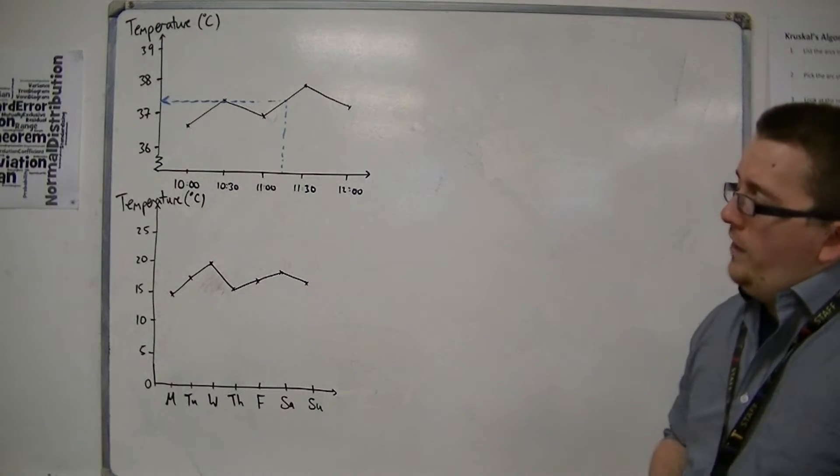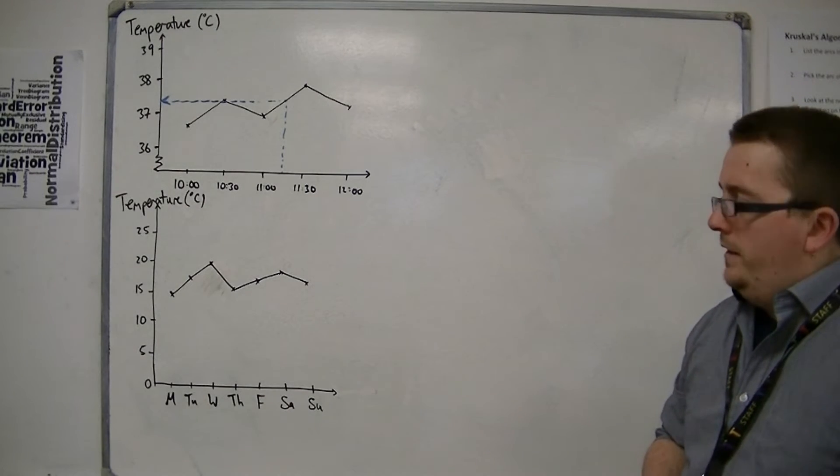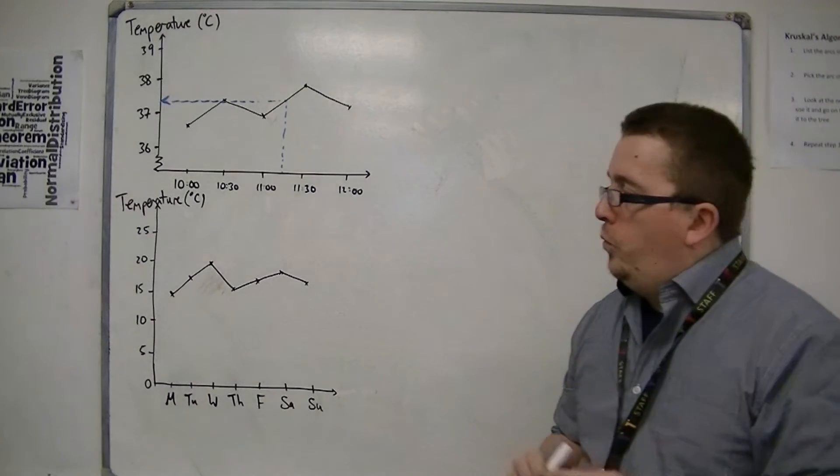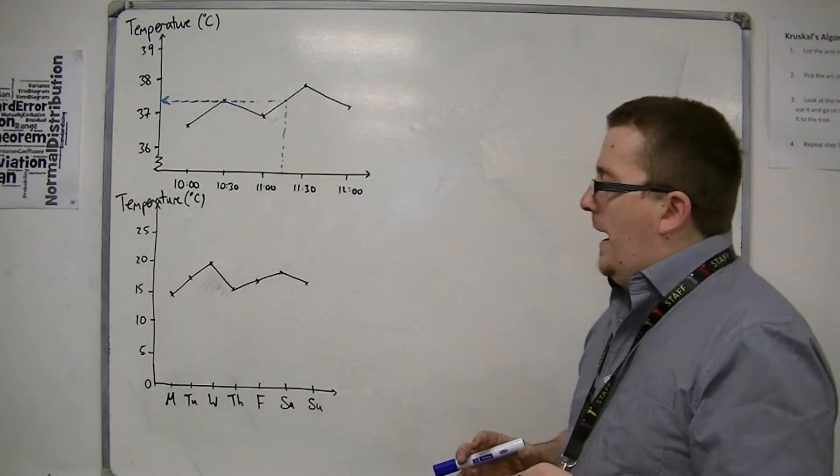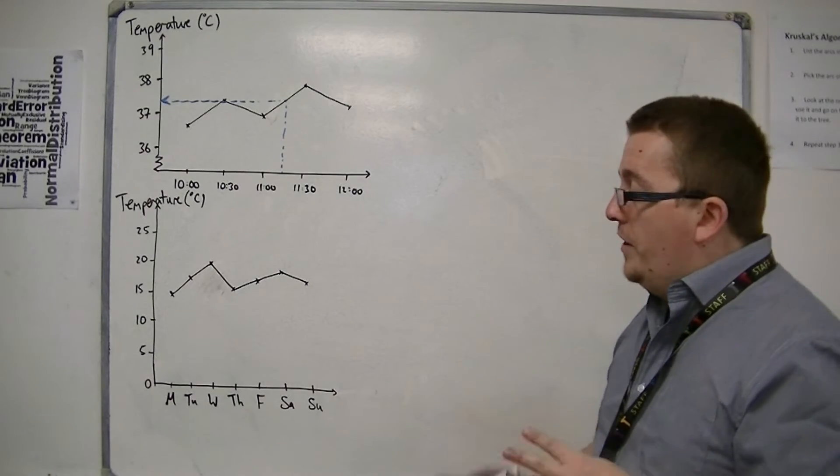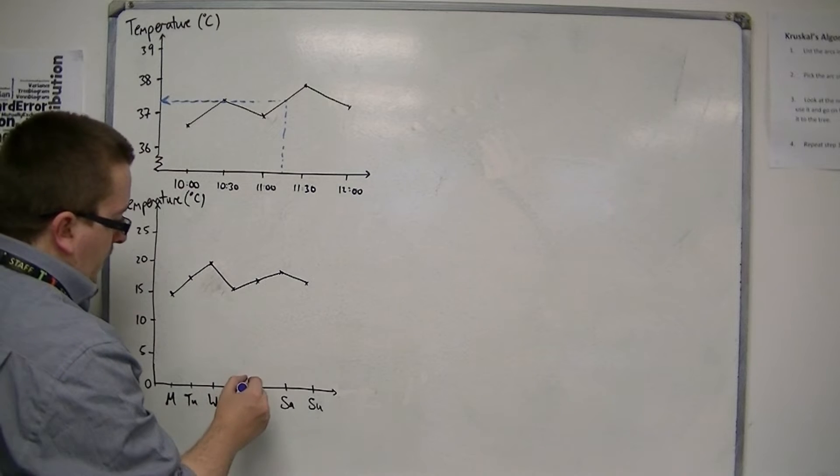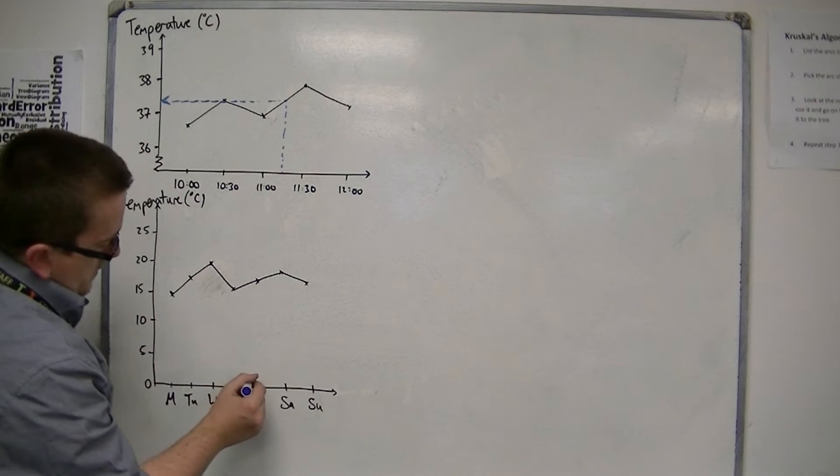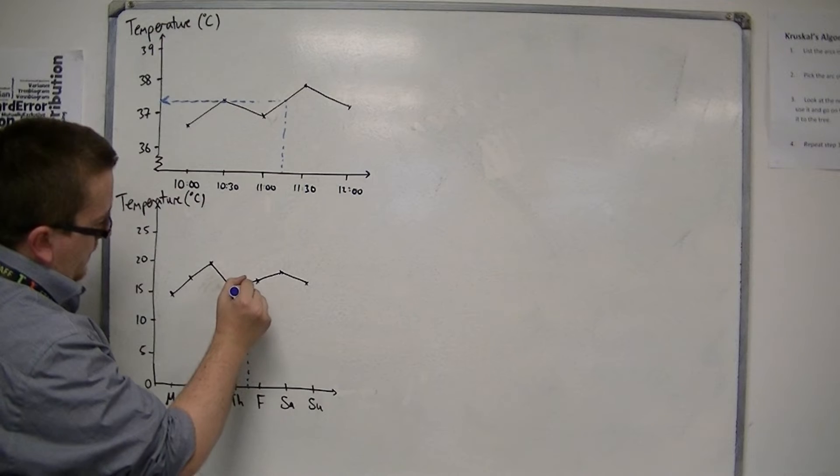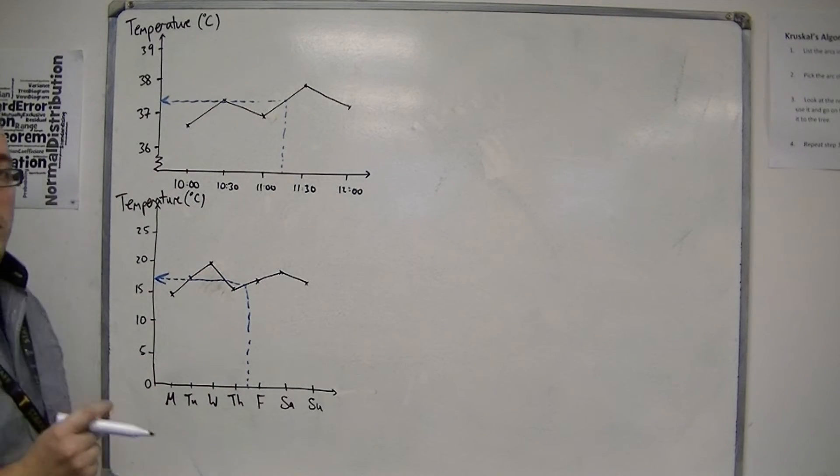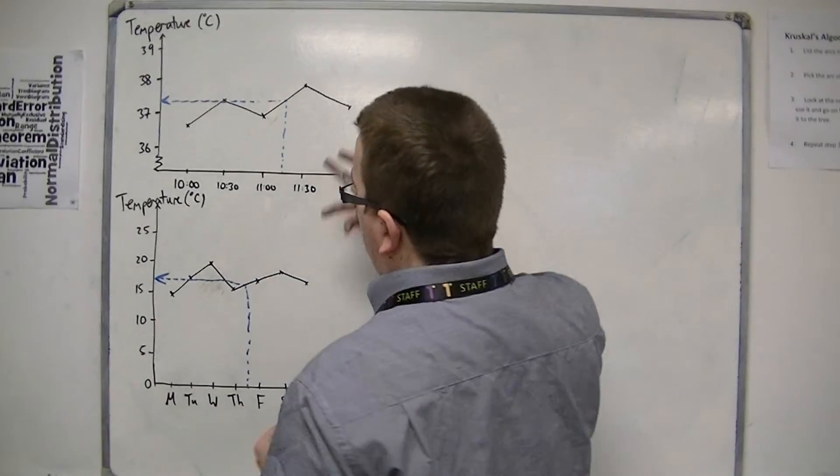If I was going to use this graph to estimate, however, let's say I wanted to know what was the temperature at midnight on Thursday. So you might be thinking, well okay, well I could go halfway between Thursday and Friday, go up to my line, and then straight along, and then read off my temperature. Okay? Much in the same way that I did there.